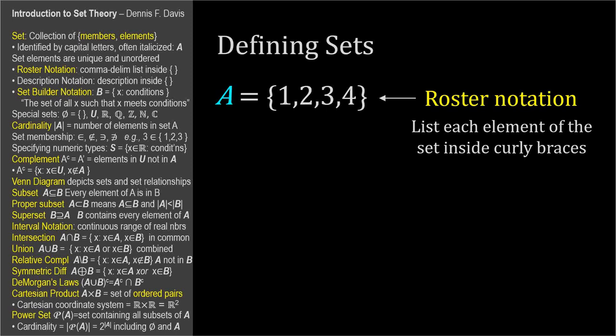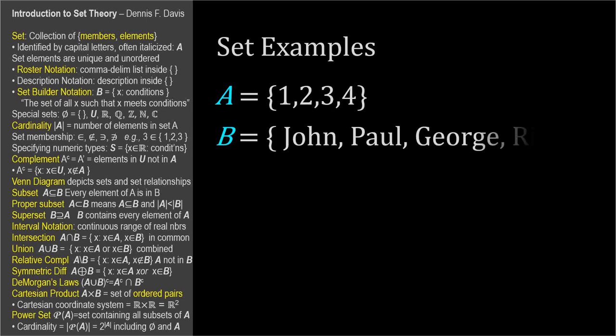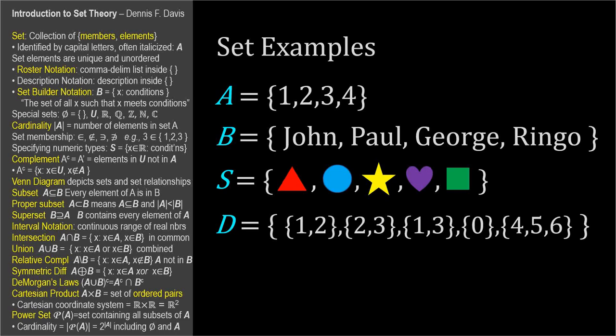This is an example of roster notation, where we define a set by listing its elements inside curly braces separated by commas. This statement would be read out loud as A is the set of 1, 2, 3, 4. Once defined, a set can be referenced by its name or label. The elements of a set can be anything, such as numbers, people, objects, or even other sets. I'll mostly, but not always, use numbers when illustrating concepts in this video.